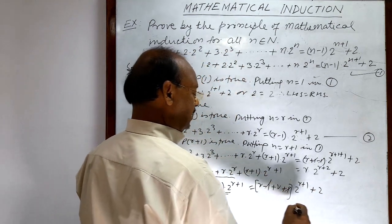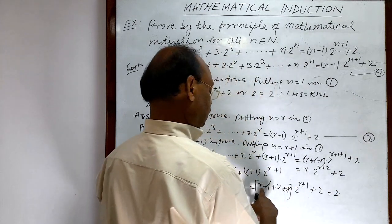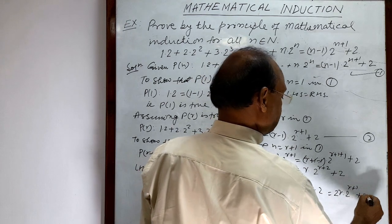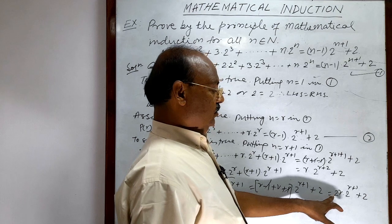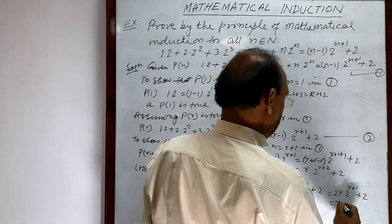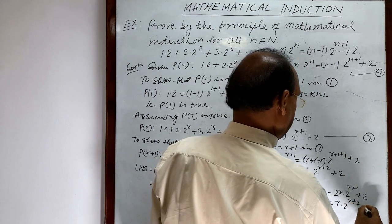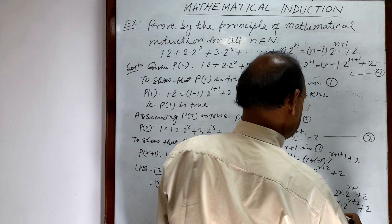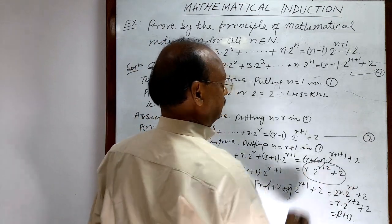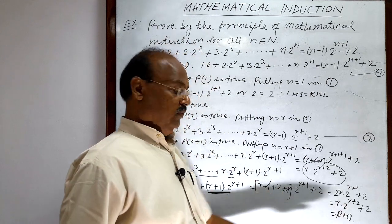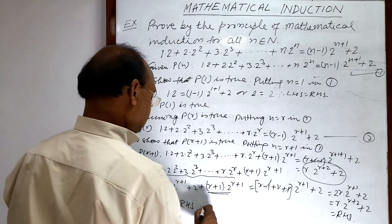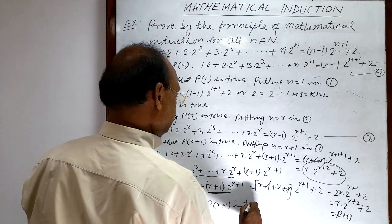Here −1 and +1 cancel out, giving 2ʳ⁺¹·(2r) + 2 = 2r·2ʳ⁺¹ + 2 = r·2ʳ⁺² + 2. This is exactly the right hand side. We started with the left hand side and arrived at the right hand side, so LHS = RHS. Therefore P(r+1) is true. This completes the third and last step.